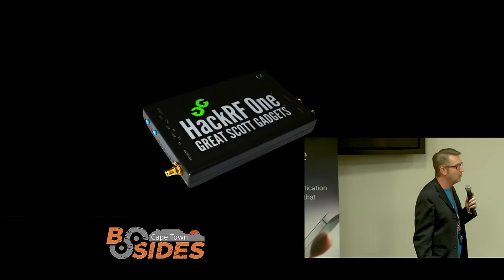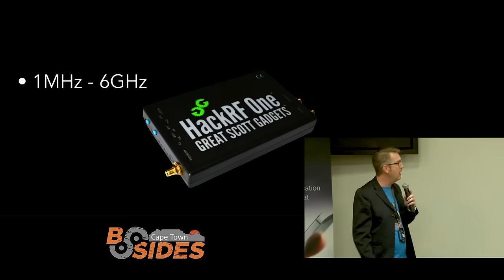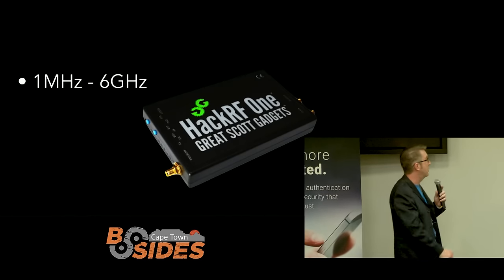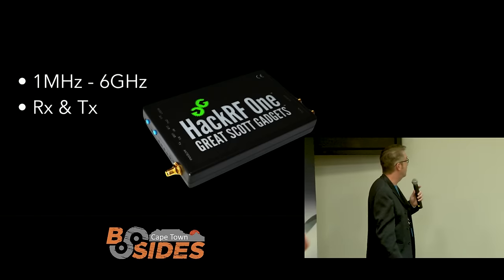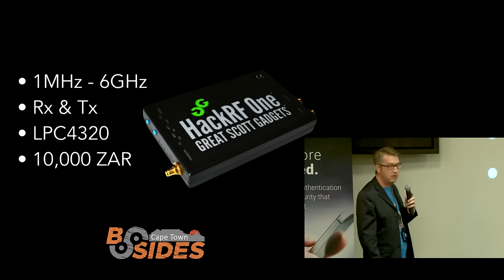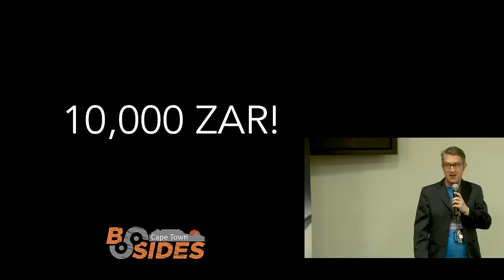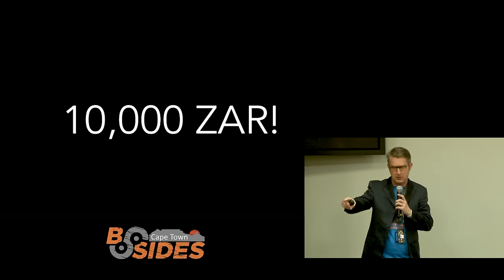It was started by a guy called Michael Osmond. It's maybe twice the size of a Raspberry Pi, and works anywhere between one megahertz up to six gigahertz. It can both receive and transmit — so we say RX and TX. It's got a cool ARM chip in it, and it only costs 10,000 Rands. Some people are getting better deals than when I was looking, but you have to chat to those people afterwards.